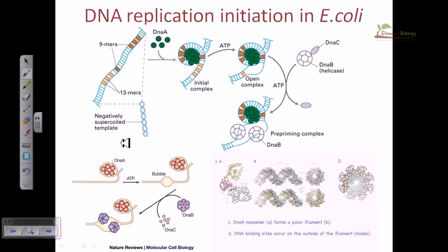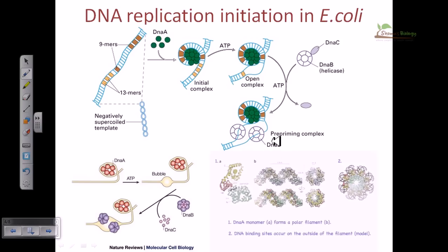In this video tutorial, we'll be looking at DNA replication initiation in Escherichia coli. For this initiation stage, we need two important proteins: one is called DNA A and another one is called helicase, or DNA B. DNA A and DNA B, along with their own accessory proteins, achieve the task of reopening the DNA complex and making an open complex for DNA replication.